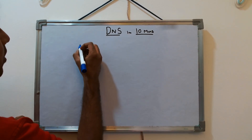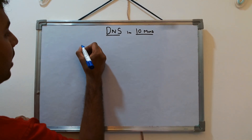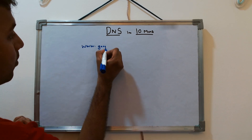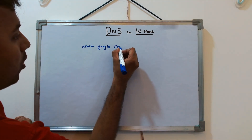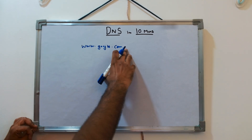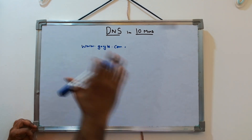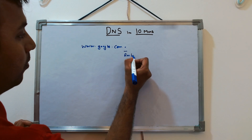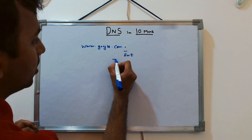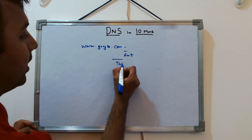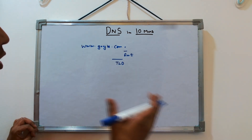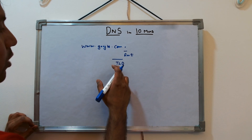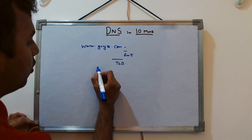Whenever you type www.google.com, the dot at the end is implicitly added and is known as root. Dot com is known as your TLD — top level domain. Dot com, dot edu, dot org, dot in — all these are your top level domains.